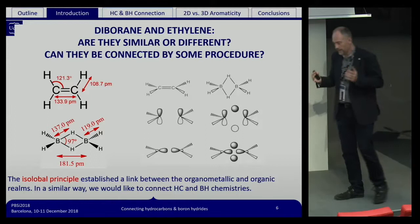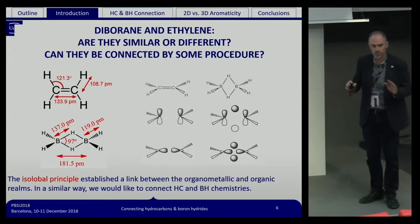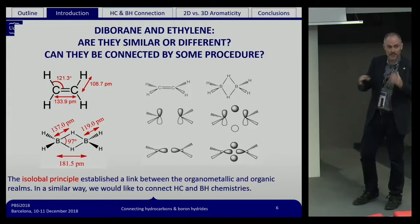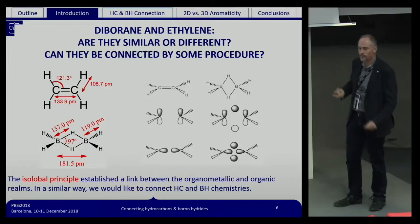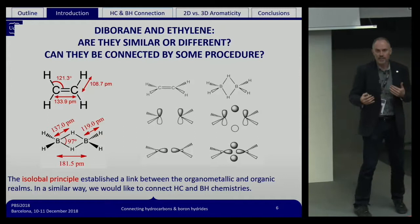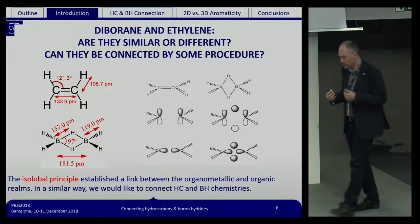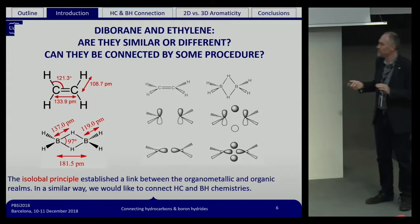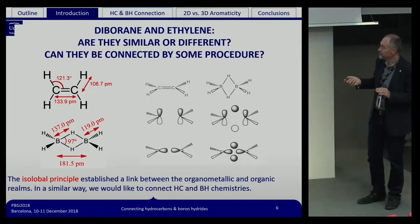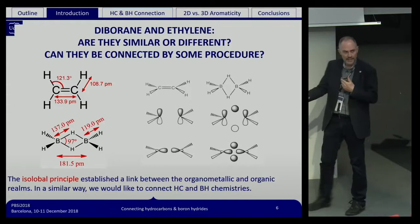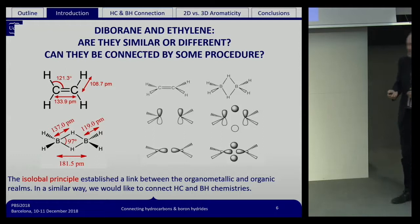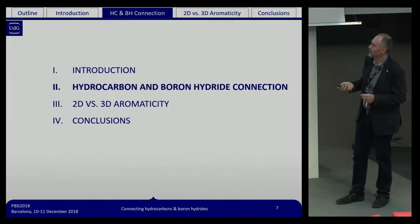So there are clearly two chemistries that are very different, but they also have similarities. If you compare ethane and diborane, the structure has many similarities, and the molecular orbitals also resemble each other in the two cases. We thought it could be interesting to find a way to relate the two chemistries, in a similar way to how the isolobal principle formulated by Hoffmann established a link between organometallic and organic chemistry. Could we establish a link between boron hydride and hydrocarbon chemistry? That was the question we started to answer.